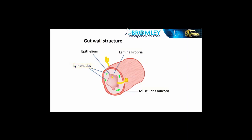Beneath these layers we then have the muscularis mucosa. This is a double layer of muscles which are able to move the epithelial surface independent of the actual peristaltic waves going through the gut itself, producing small and fairly local movements of the surface. Stretching through from the submucosa, there may be glands emptying through into the lumen of the gut.